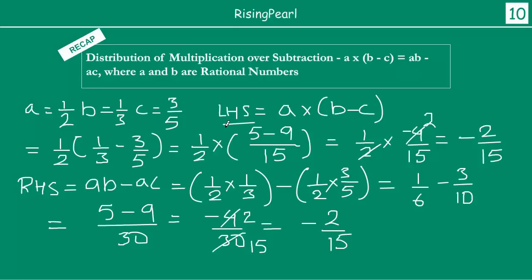So we can see that the left hand side was minus 2/15 and the right hand side is also minus 2/15. So we can again conclude that for rational numbers A, B, C, the distribution of multiplication over subtraction is indeed valid and true. This wraps up the basic operations of rational numbers.